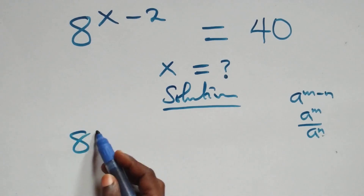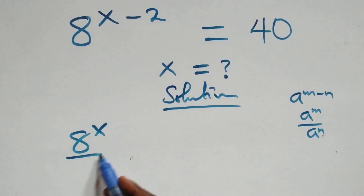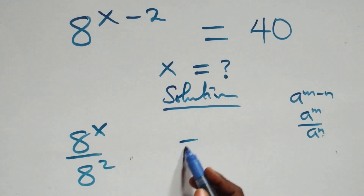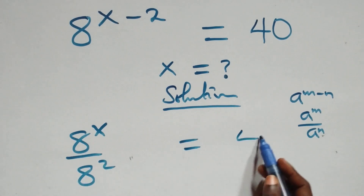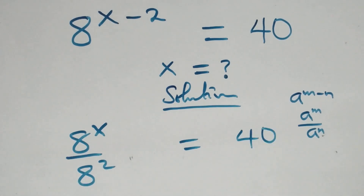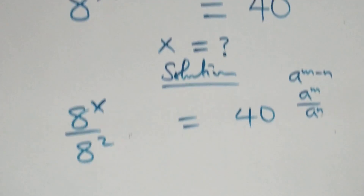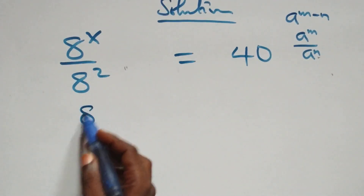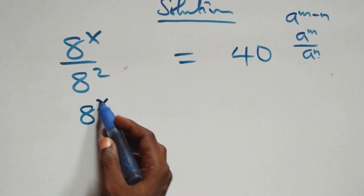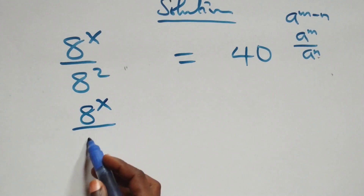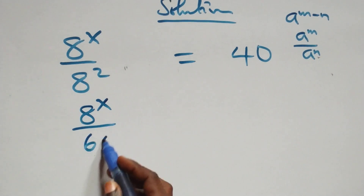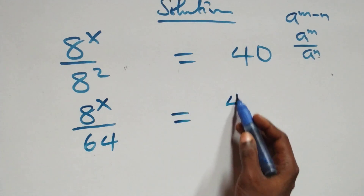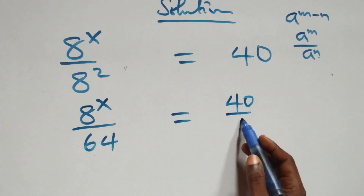This becomes 8 raised to power x over 8 squared equals 40. We can write this as 8 raised to power x over 64, and here we can write this as 40 over 1.